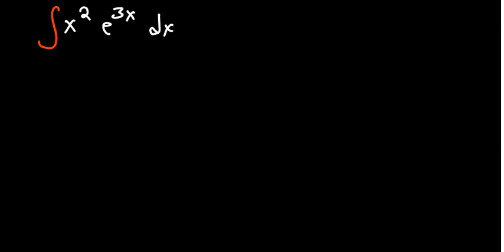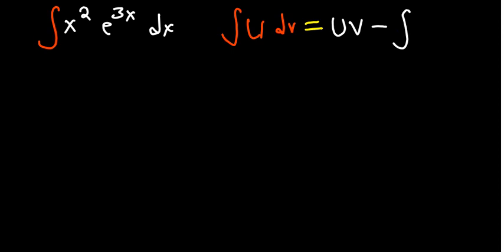Each time you have a product of two functions when you're asked to integrate them, use the method called integration by parts. The formula is the integral of u dv equals u times v minus the integral of v du.